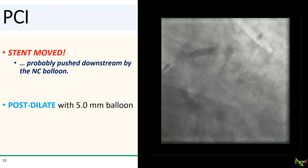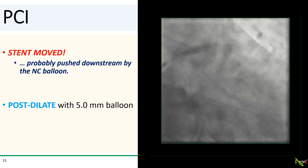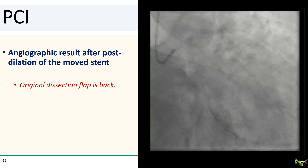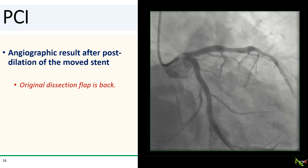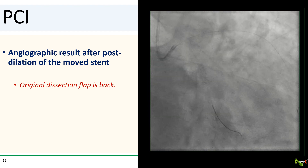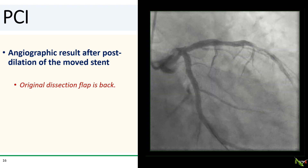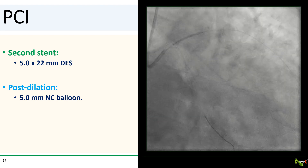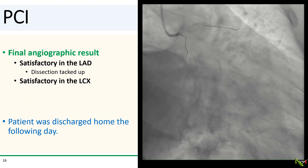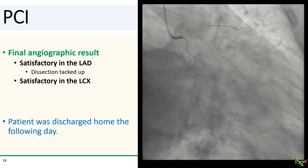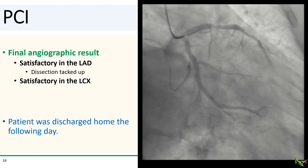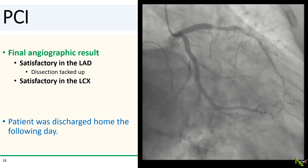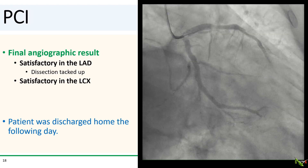Fortunately, we were able to get the 5.0 balloon down across the stent in its more distal position and perform post-dilation. After post-dilation the stent looked fine and had not moved any further. However, looking carefully at the very proximal LAD, the original dissection flap was back. So we placed a bigger stent this time — a 5.0 by 22 mm DES — overlapping with the previous stent, and performed post-dilation with a 5.0 NC balloon. The final angiographic result is quite satisfactory, with the dissection nicely tacked up in the LAD and the culprit lesion nicely treated in the circumflex. The patient went home the next day after an uneventful night.